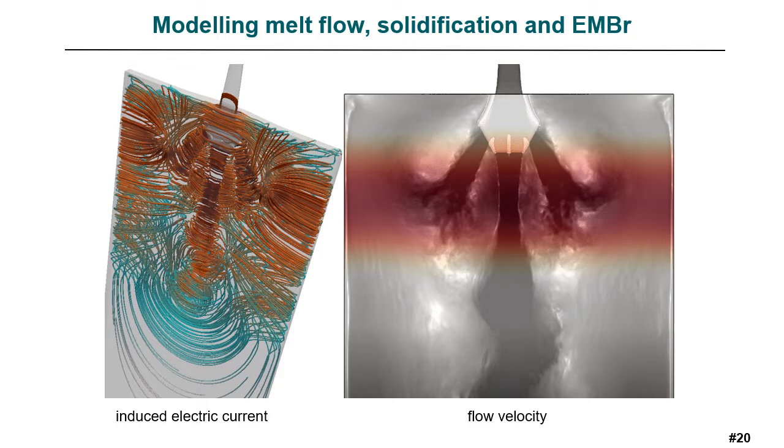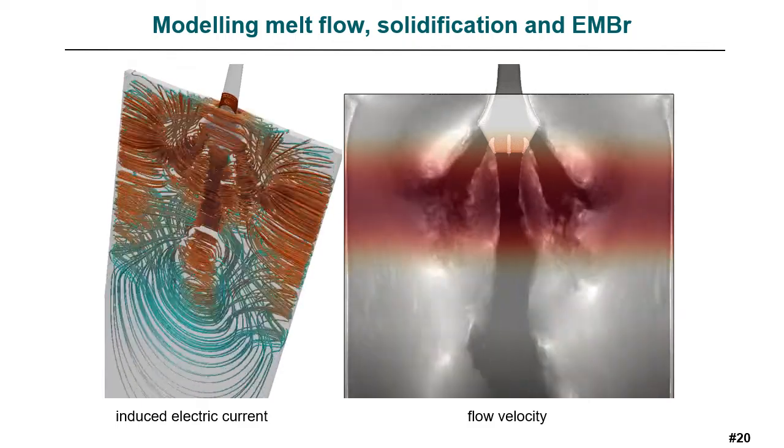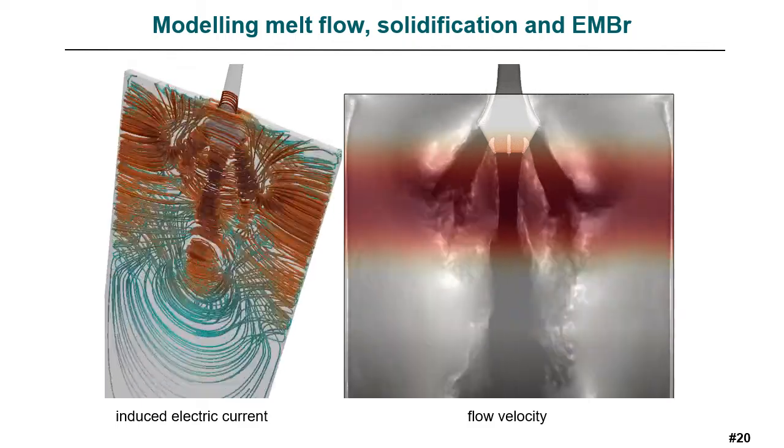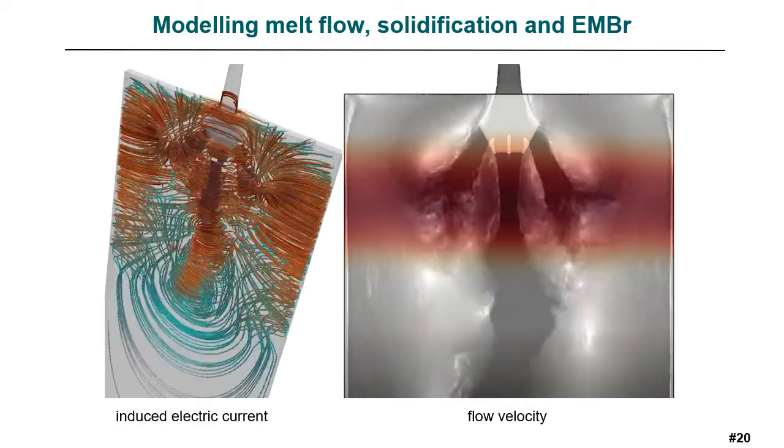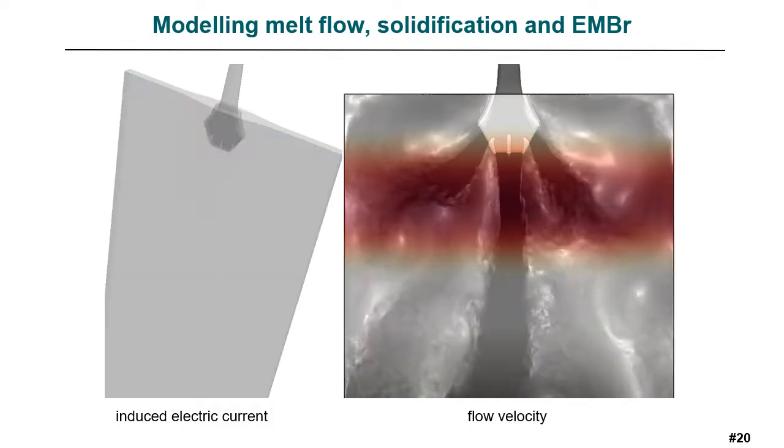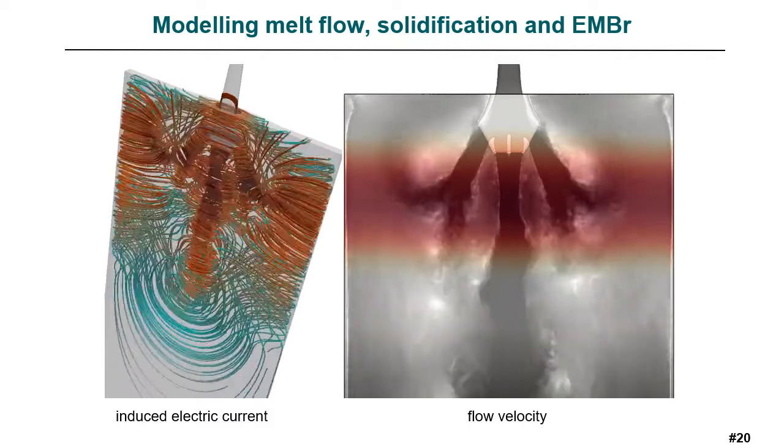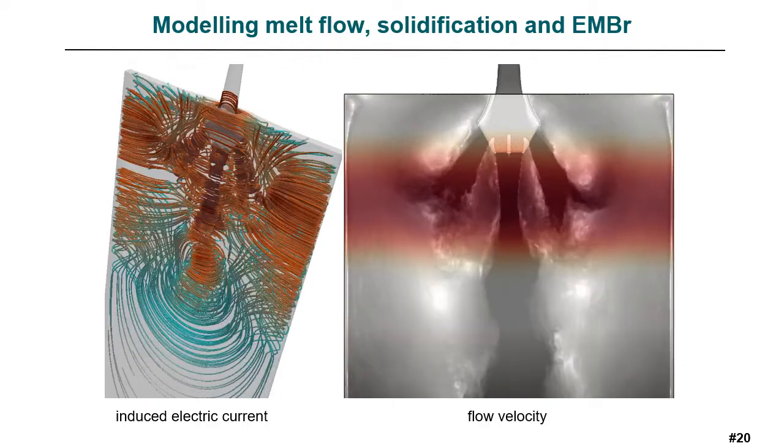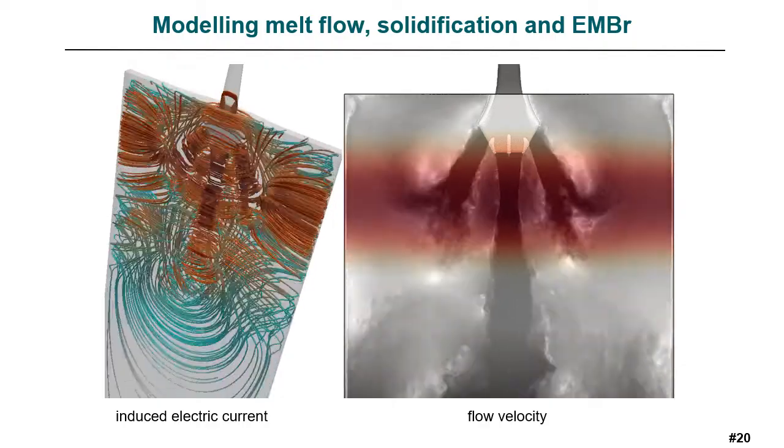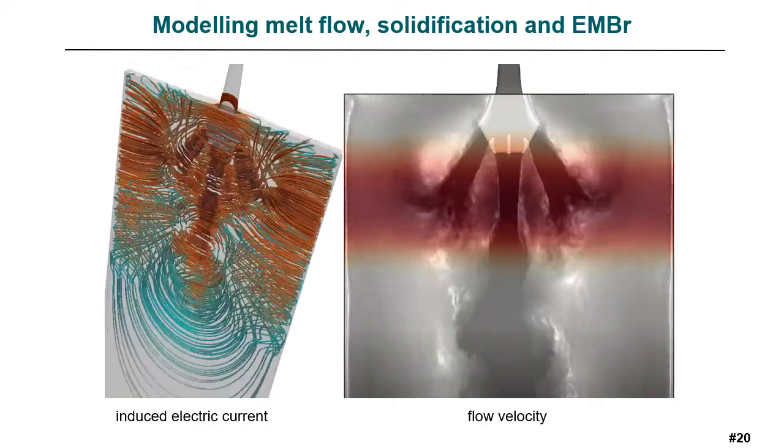When the formation of the solid shell is considered, we can see on the left animation that most of the electric current becomes quite symmetric and tends to go through the solid shell. Thereby the flow pattern on the right becomes much more stable and not so many oscillations are observed.